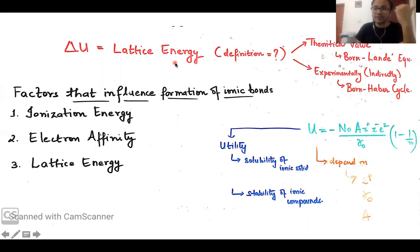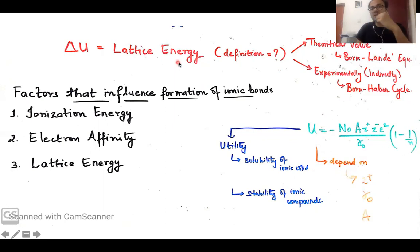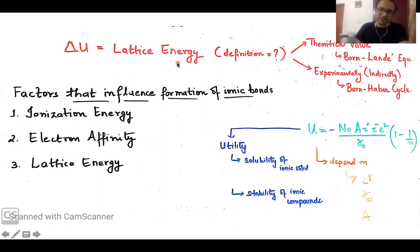How do we define lattice energy? It is nothing but the energy released for the formation of one mole of the ionic compound from its constituent ions in its gaseous state. That is a very simple and straightforward definition for lattice energy.